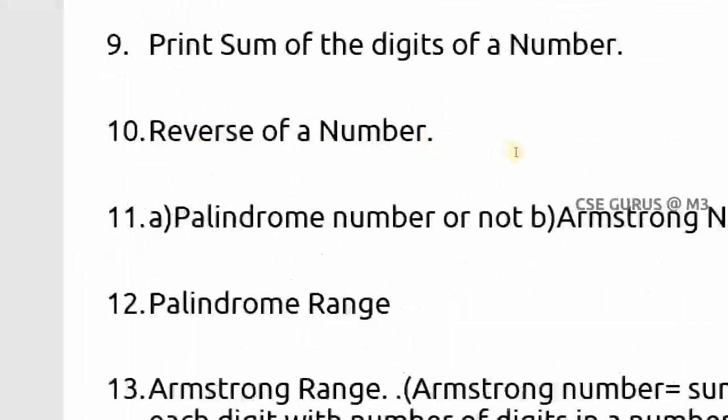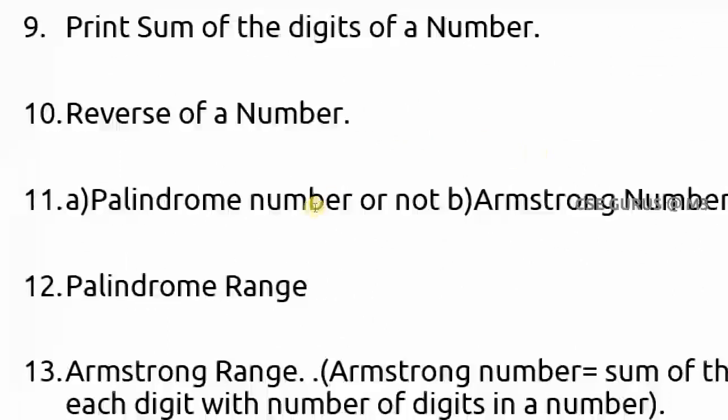Now we go to the 11th question: palindrome number or not. A palindrome means if you reverse the number you get the same number. For example, 323 reversed is still 323, or 848 reversed is 848, or 1221 reversed is 1221.